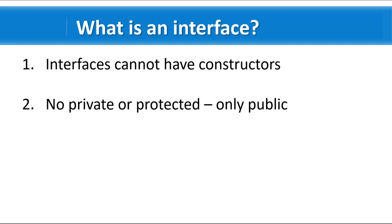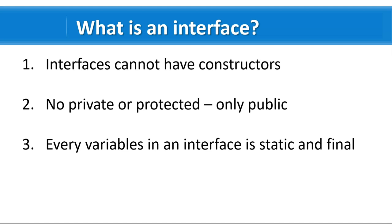There are no private or protected methods in an interface — only public. If you create a private method, there is no use because that method cannot be implemented. Similarly, no protected, because you are not creating a subclass — you are implementing an interface, not extending it. So only the 'public' access specifier is allowed. Also, every variable in an interface is static and final.